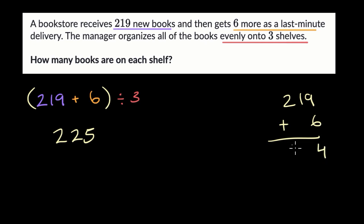9 plus six is 15. Regroup that one and then we just have tens here. So we have one ten plus another ten is two tens. And then we have the 200s. But you might've just said, okay, 19 plus six is going to be 25. So 219 plus six is 225. And then we want to divide that by three.